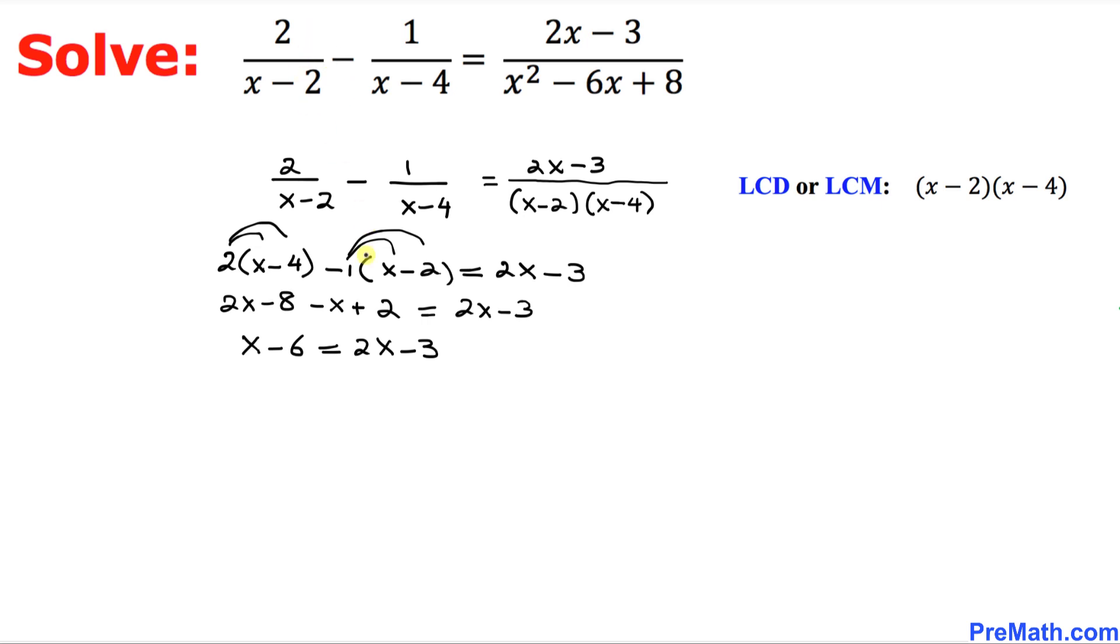Now, we are going to combine this one. I'm going to simply subtract x from both sides. Alright, so that means this x and negative x is gone. So we simply ended up with negative 6 equal to 2x minus x, which is going to make x minus 3.